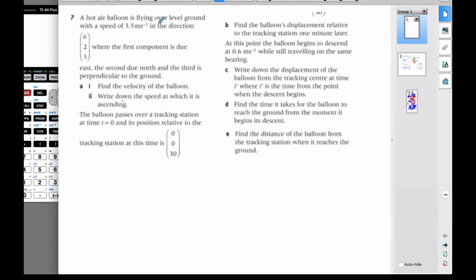In this problem we have a hot air balloon flying over level ground at this particular speed in this direction. The first component is due east, 6 in the east direction. The second is due north, 2 in the north direction. And the third is perpendicular to the ground, going up into the sky.